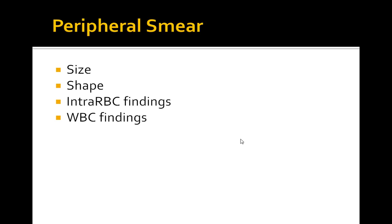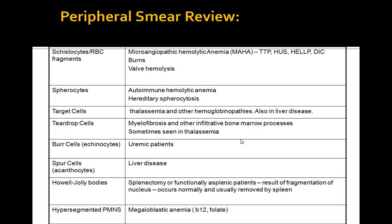The peripheral smear is a select area where RBCs are evenly spaced. You can look at their size, shape, and various abnormalities, which can really help you narrow down your differential.